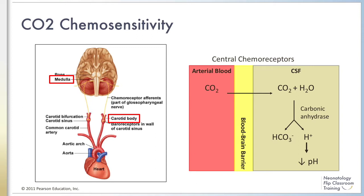The primary stimulus for chemoreceptors is pH. The main cause of decreases in pH is an increase in the partial pressure of carbon dioxide. Central chemoreceptors are neurons in the medulla that respond directly to changes in hydrogen ion concentration in the cerebrospinal fluid. Hydrogen ions do not cross the blood-brain barrier, but carbon dioxide does. Carbon dioxide is converted to hydrogen ion and bicarbonate by carbonic anhydrase in the CSF, and the increased hydrogen ions lower the pH, which is sensed by chemoreceptors in the medulla.